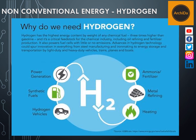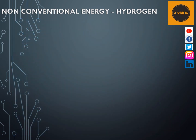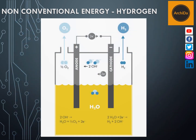Hydrogen is an energy carrier and can be produced from a wide variety of sources. Hydrogen from renewables can be produced through various pathways, with the most established being the use of renewable electricity to split water into hydrogen and oxygen in an electrolyzer.